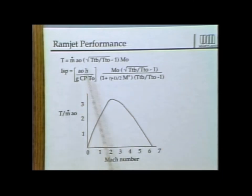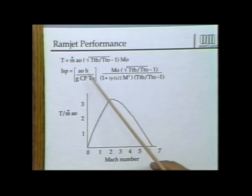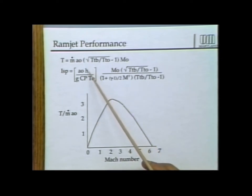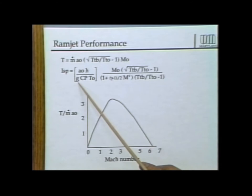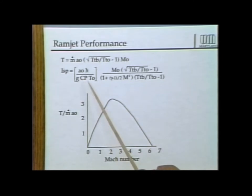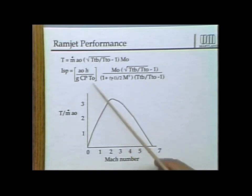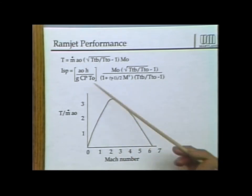Dividing thrust by unit weight flow of fuel gives specific impulse. The expression isolates constants: H is the heat value of the fuel (energy per unit mass), A₀ is ambient speed of sound, g is the gravitational constant, C_p is heat capacity, and T₀ is ambient static temperature. The gravitational constant appears because specific impulse is defined per weight flow rather than mass flow of fuel.